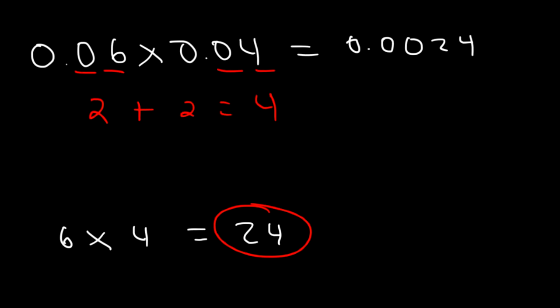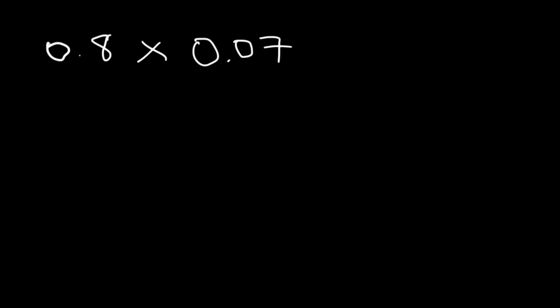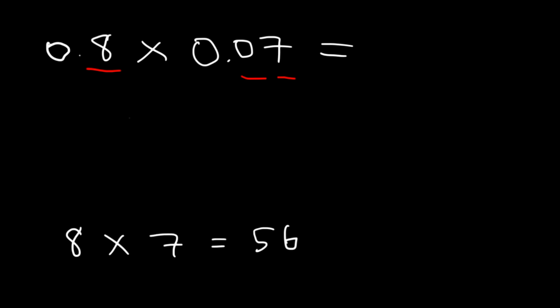You need to have a total of 4 digits to the right of the decimal. Now let's try another example. What is 0.8 multiplied by 0.07? So first, we know that 8 times 7 is 56. Now let's look at the digits. The first number has one digit to the right of the decimal point. The second number has 2. 1 plus 2 is 3, so our answer should have three digits to the right of the decimal point.